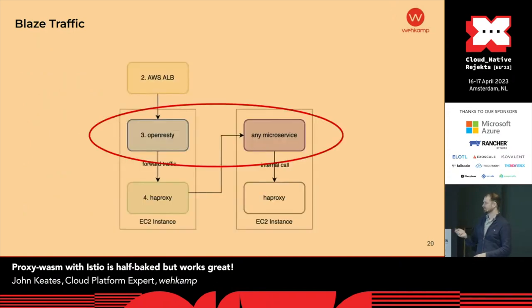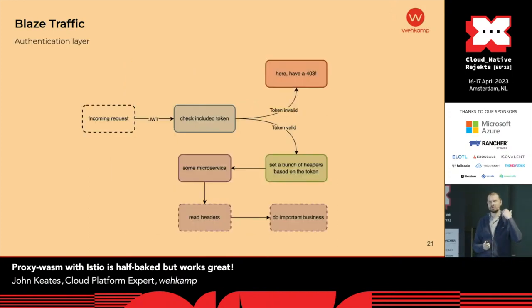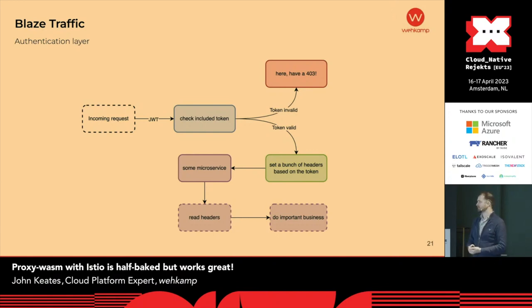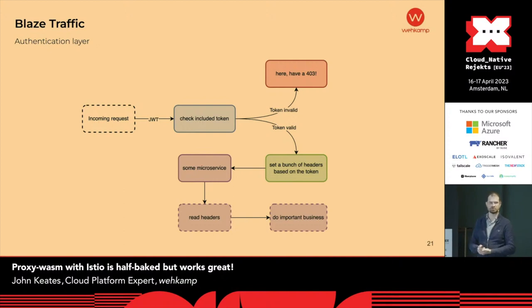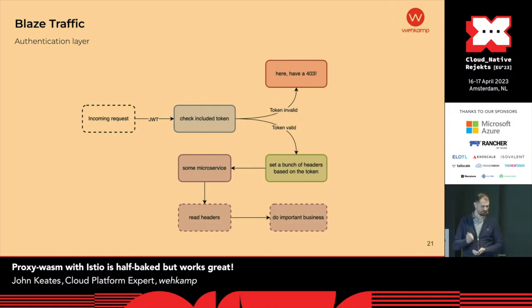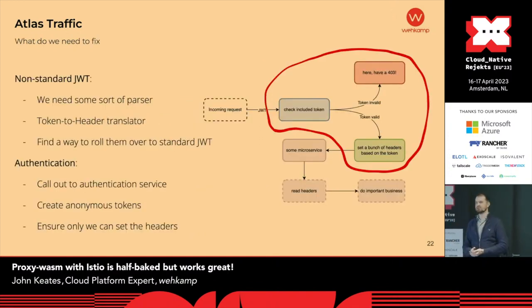The authentication layer is happening between the OpenResty container and the microservice container. The OpenResty container ingests traffic from the outside world into your cluster. It sees a JSON web token coming in, makes sure it's valid, and if it is, extracts some information from that token and puts it in HTTP headers. That means your microservice just needs to check the headers to know which customer it needs to serve — the headers contain a customer number, easy peasy. Not very secure, admittedly. But this functionality, exactly as pictured, needs to be re-implemented in Istio.